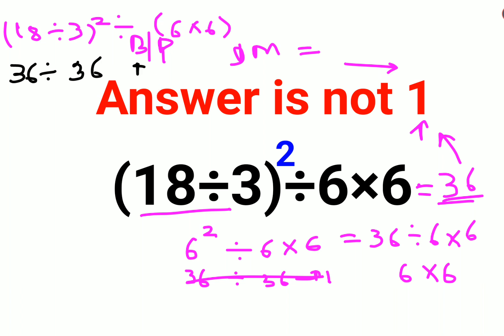The answer in this case becomes 1. So this question would give you the answer as 1, but this question, since there was a lot of ambiguity here, the answer will be 36.